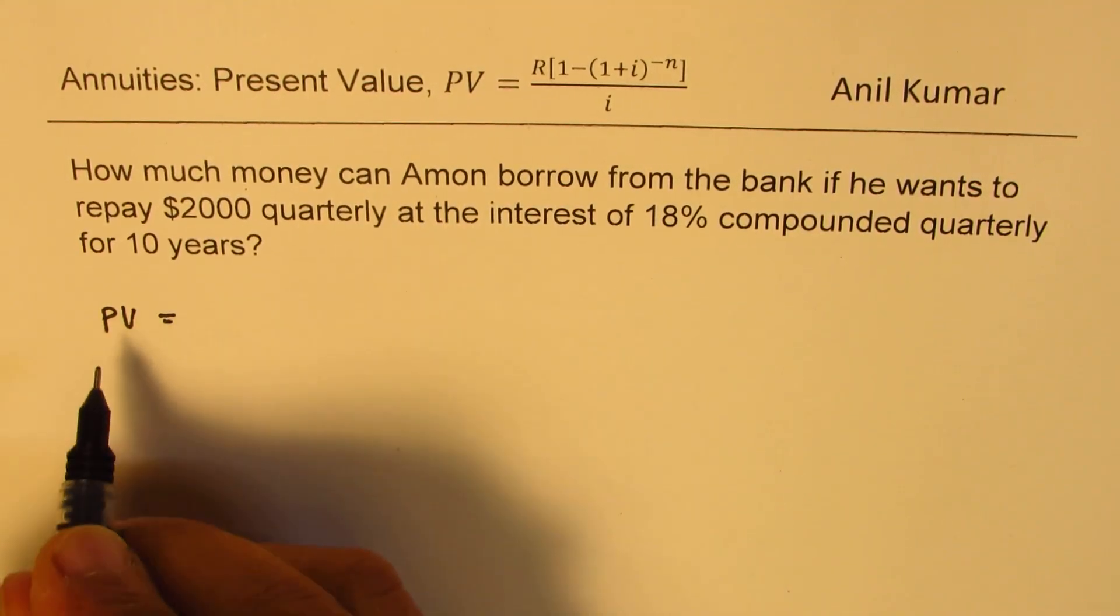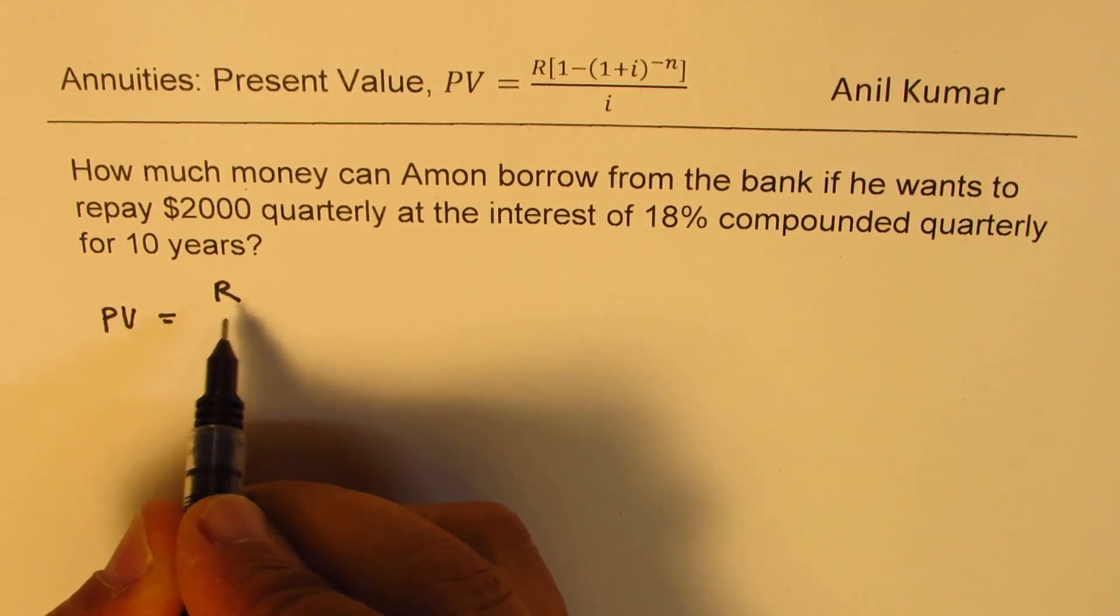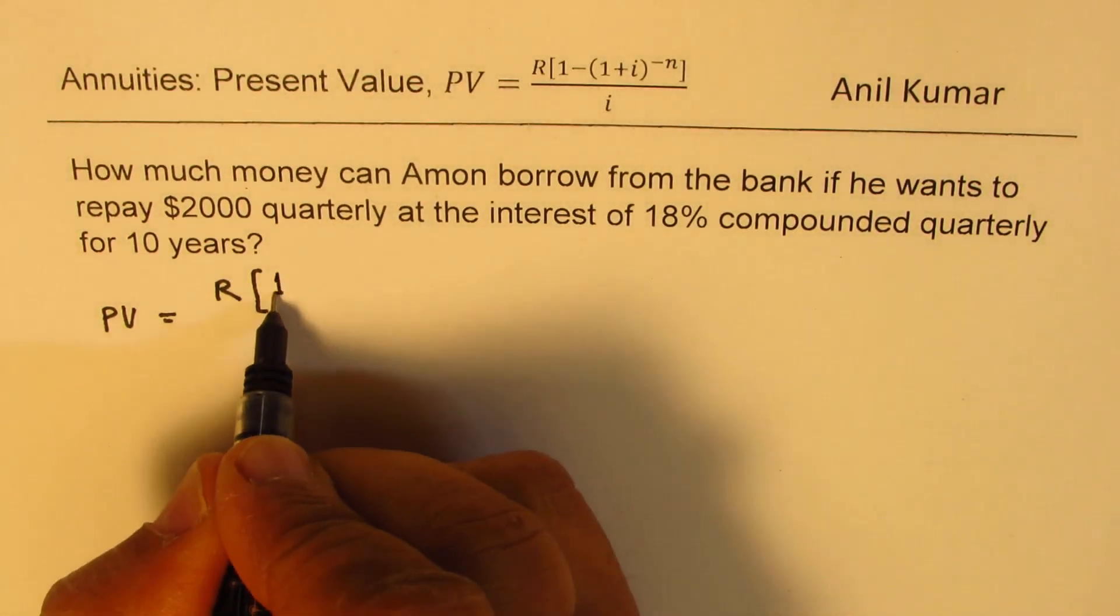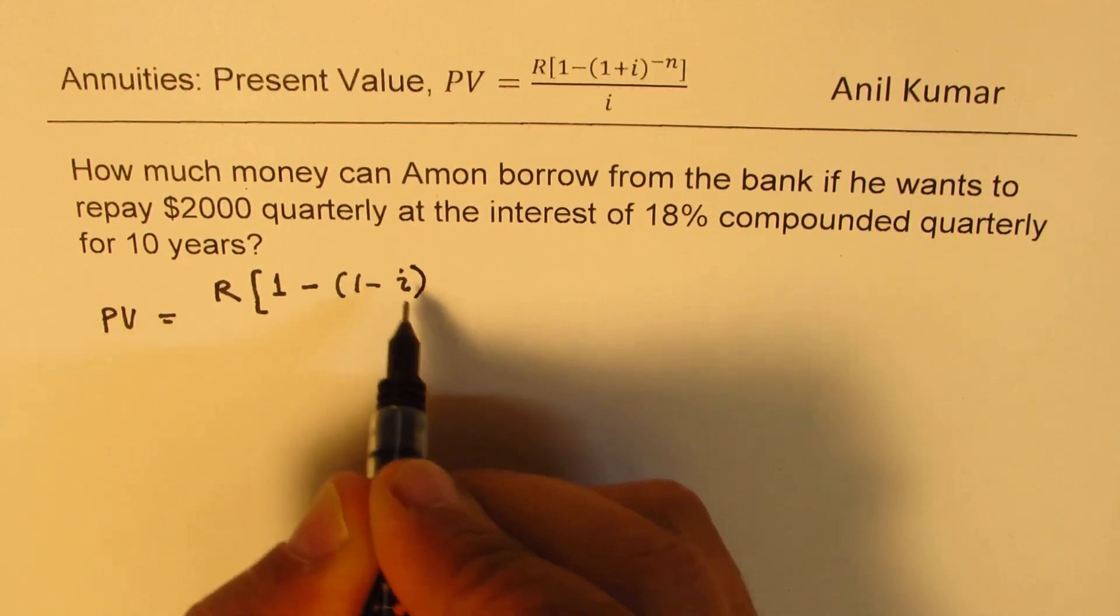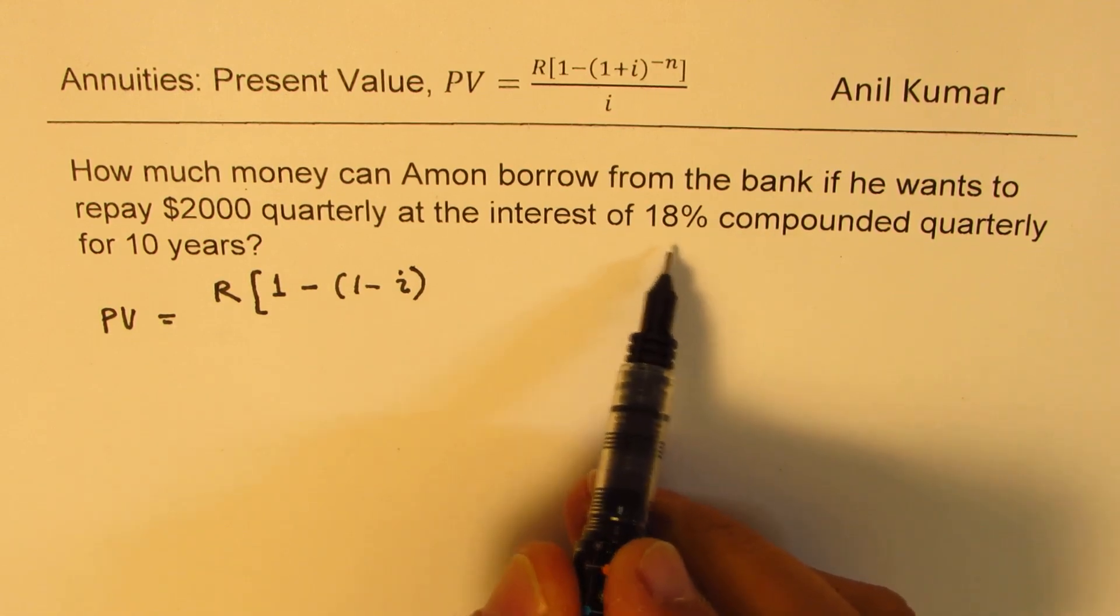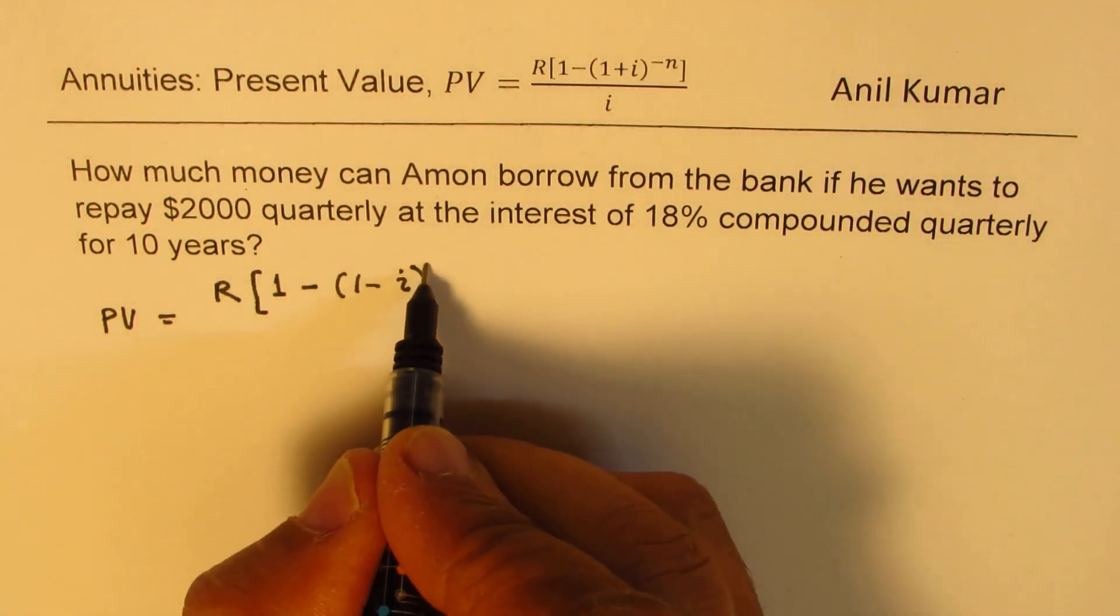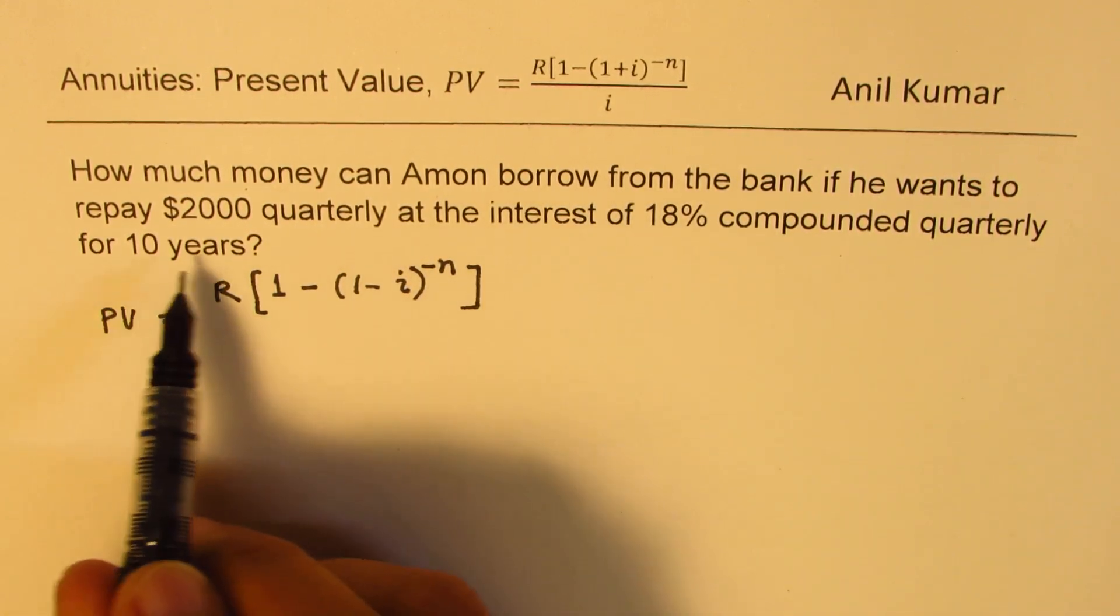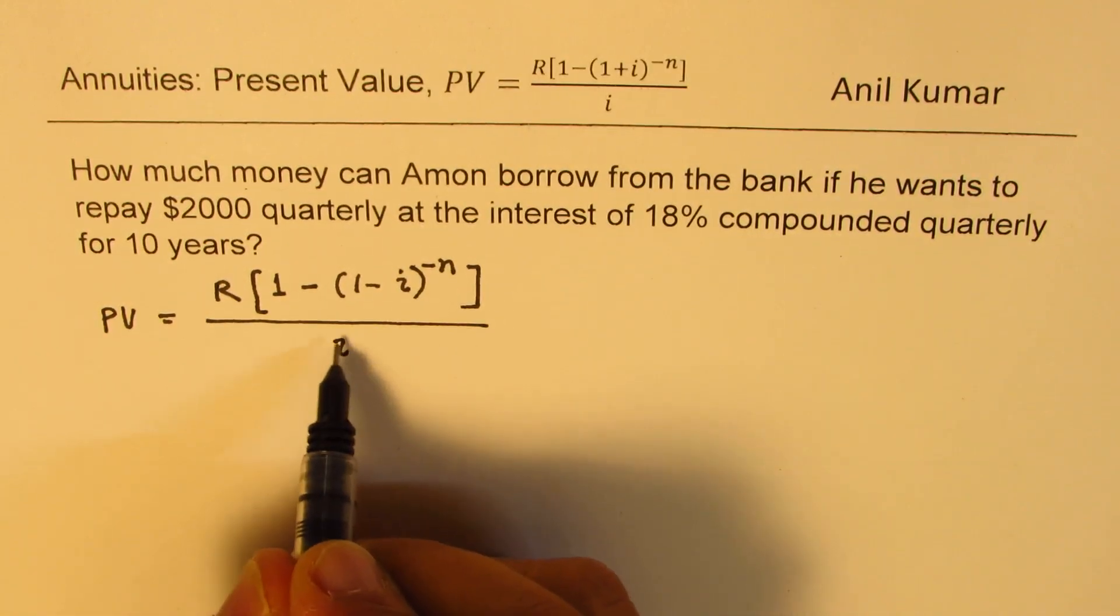We are really interested in finding the present value if a recurring amount being paid quarterly is known to us as $2,000 and the formula is R times 1 minus (1 plus i) to the power of minus n, divided by i. Now this i which I'm writing is the interest rate per quarter. Here we are given annual compounded quarterly. And n is the number of terms which is for 10 years, 10 times 4. So those things you have to keep in mind.